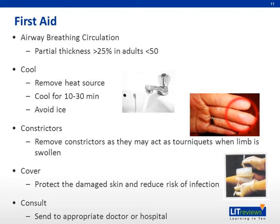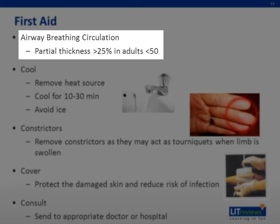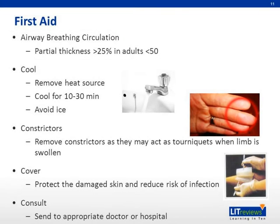In many instances, good first aid and pre-hospital care can significantly reduce ongoing damage and improve outcome in burns patients. The first thing to do is to ensure that the patient's airway, breathing, and circulation are stable and resuscitate as needed. In particular, we should look out for signs of inhalational injury such as singed nasal hairs and sooty sputum. Oxygen should be administered if available, and if a person exhibits signs of shock, elevating the legs may be of use until intravenous fluids are commenced. Remember, people don't usually die of a burn injury immediately — what kills them is airway compromise or associated trauma. The main treatment of the burn skin itself may be remembered as the four C's: cool, constrictors, cover, and consult.